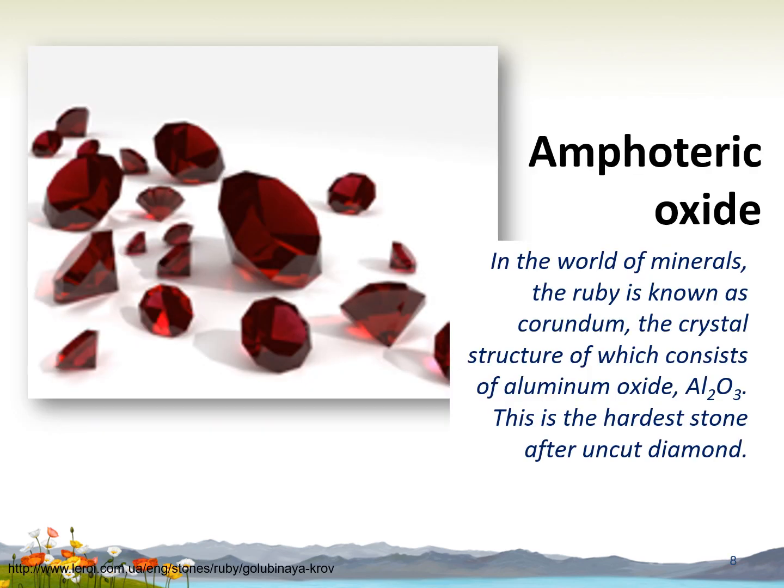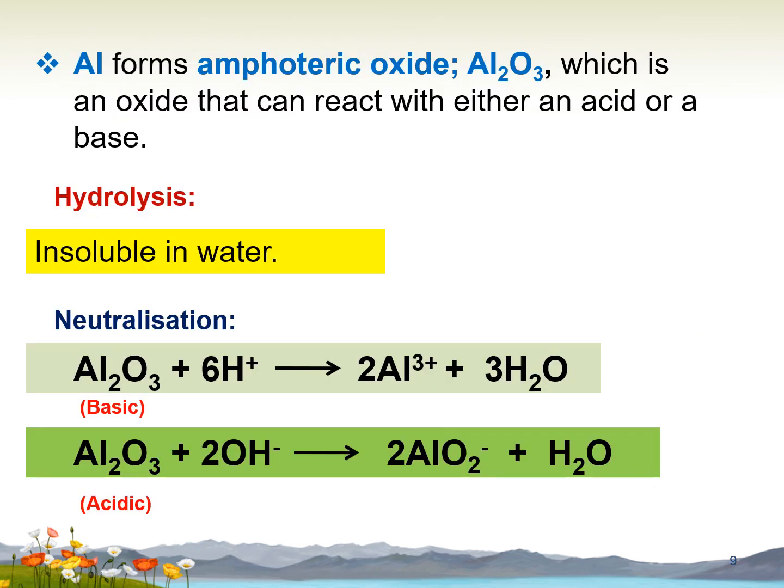The ruby is known as corundum, the crystal structure of which consists of aluminium oxide. Aluminium oxide is one example of an amphoteric oxide — this is the hardest stone after uncut diamond. Aluminium forms amphoteric oxide, which is an oxide that can react with either an acid or a base. Aluminium oxide is insoluble in water, so no hydrolysis equation can be written. For the neutralization equation, when Al₂O₃ reacts as a base, it reacts with H⁺ to form Al³⁺ ion plus water. When it reacts as an acid, it reacts with OH⁻ to form AlO₂⁻, which is aluminate ion, plus water.